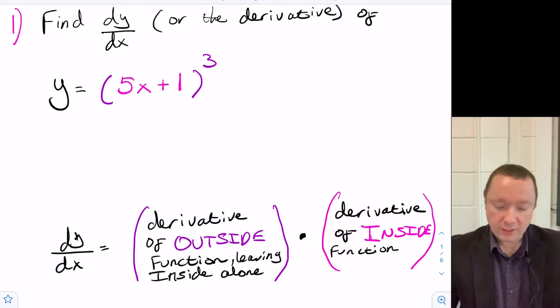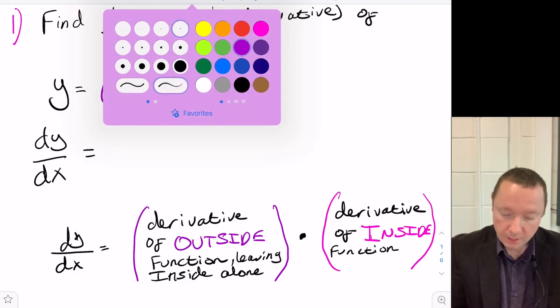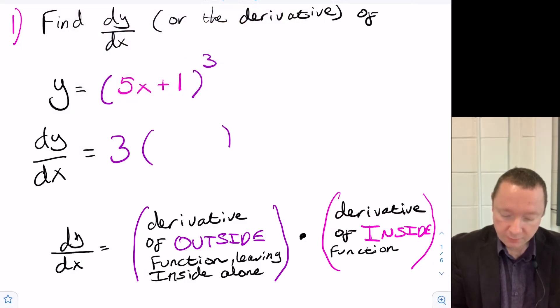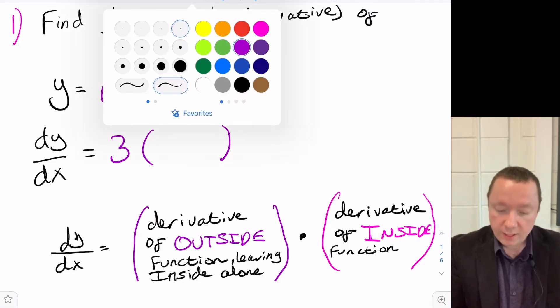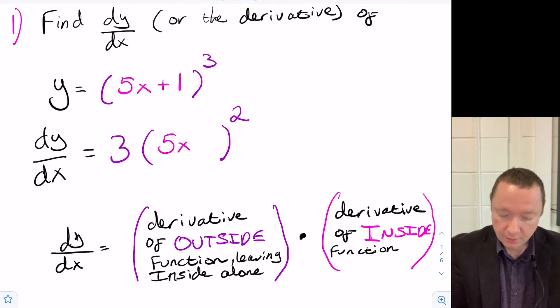So let's have a look at this example. If I want to do dy/dx of this example, then if we look at our outside function, it's cubed, so we use the power rule, take 3 down to the front, leaving the inside alone and reduce the power by 1. So it's 3 times inside squared and the inside is just 5x plus 1. I now need to do the derivative of the inside function where the inside function is just 5x plus 1, so I need to times by 5 because if you differentiate 5x becomes 5 and 1 is just a constant so that becomes 0.